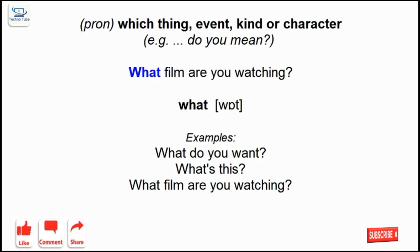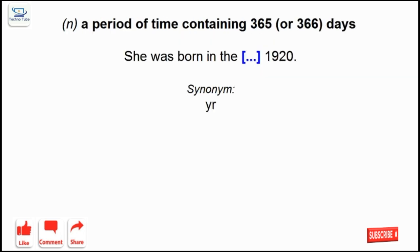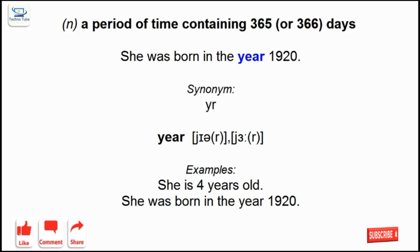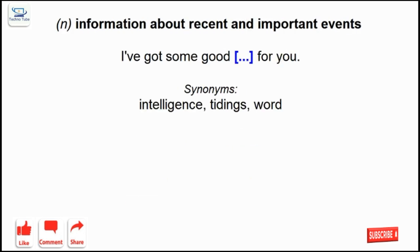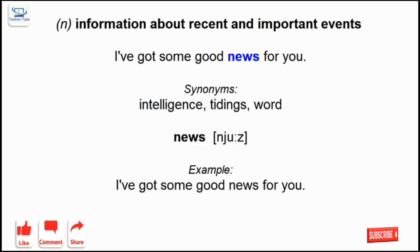What: which thing, event, kind or character. Year: a period of time containing 365 or 366 days. News: information about recent and important events.